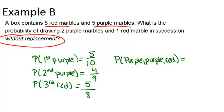So the probability of purple, then purple, then red, would be 5 out of 10, times 4 out of 9, times 5 out of 8.